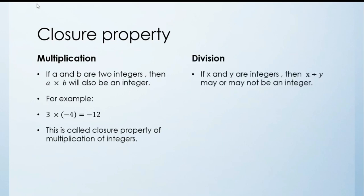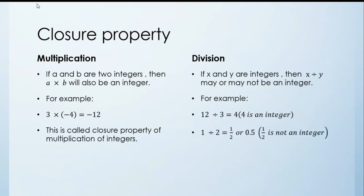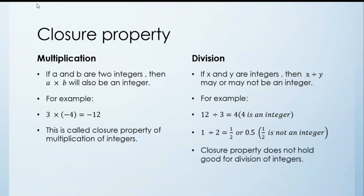Now division. If x and y are integers then x divided by y may or may not be an integer. For example, 12 divided by 3 gives 4, which is an integer. But 1 divided by 2 gives 1/2 or 0.5, which is not an integer. So closure property does not hold for division of integers.